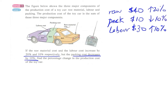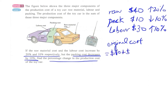We have to find the percentage change in the production cost. First, we find the original total cost of producing the toy car: $40 plus $10 plus $30 equals $80. Then we calculate the new production cost.